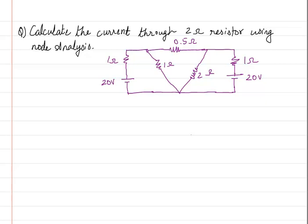Hello students, let us look at another problem which we will try to do using nodal analysis. The question asks: calculate the current through 2 ohm resistor using nodal analysis. If nodal analysis had not been specified, there would be no need to use it, because this is a perfect problem for mesh analysis since it is all voltage sources. But since the question asks for nodal analysis, we will use it.